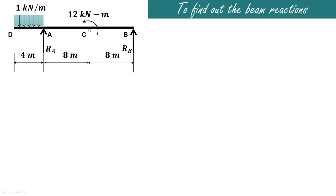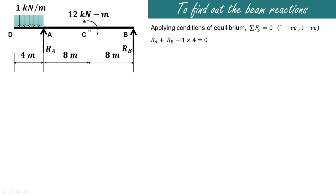The first step is to find out the beam reactions. Applying the condition of equilibrium, summation of Fy equals 0. Upward forces are considered positive and downward forces negative. RA and RB are acting in the upward direction. The uniformly distributed load of 1 kilonewton per meter acts over 4 meters, giving a total load of 1 into 4 downward. So RA plus RB equals 4 kilonewtons.